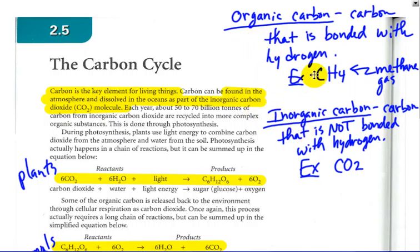So organic carbon, carbon that is bonded with hydrogen. So for example, the methane gas that comes out of our outlets here at the school consists of methane, CH4. That's what a methane molecule looks like. You can see it's a carbon attached to four hydrogen atoms.